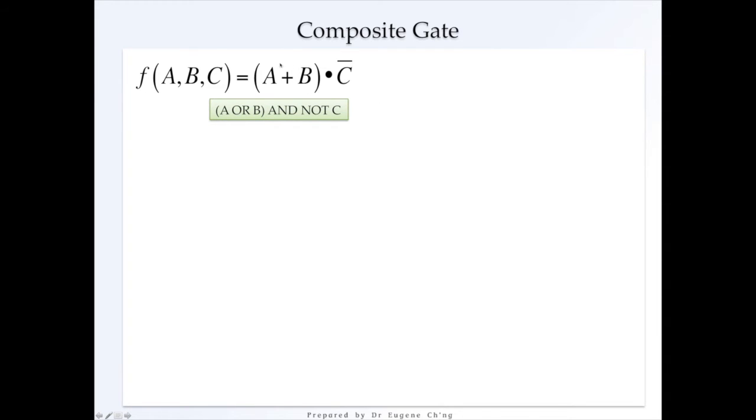So if you look at this clearly, it's A OR B in the parentheses and NOT C. So we can see how we can construct this using the Boolean logic gates as a composite gate. So this is it.